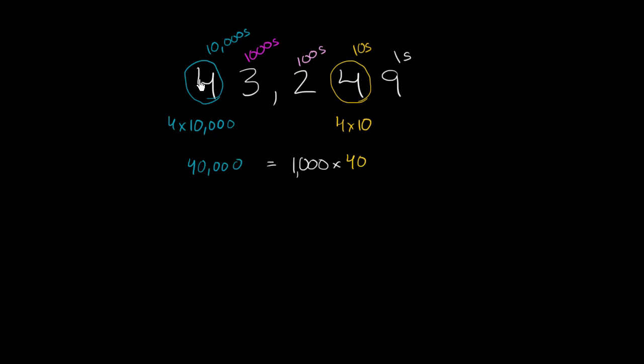Or we could say the 4 on the left here, this blue circled 4, represents 1,000 times the value as the yellow circled 4.